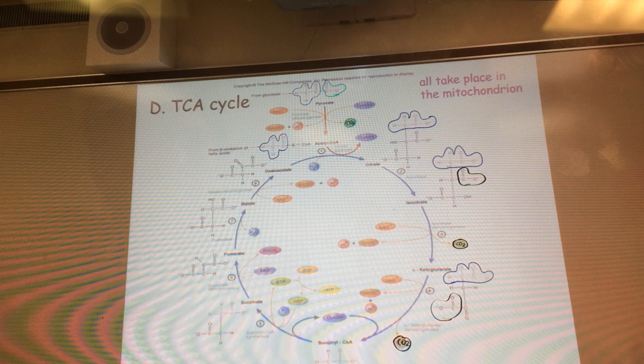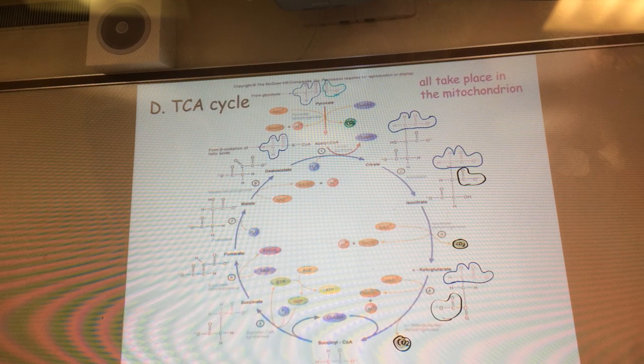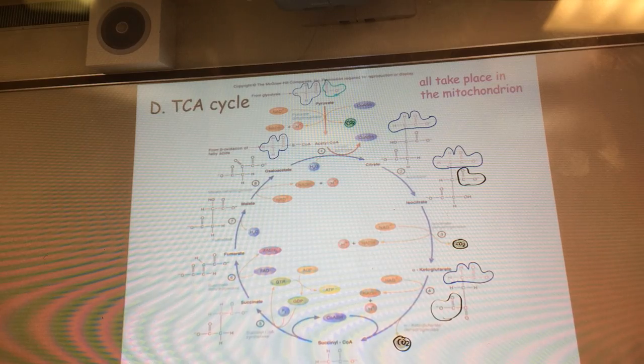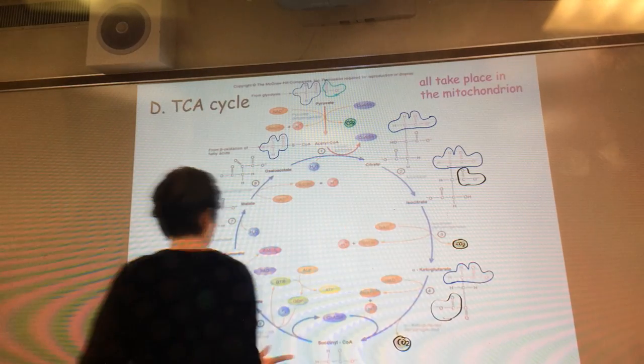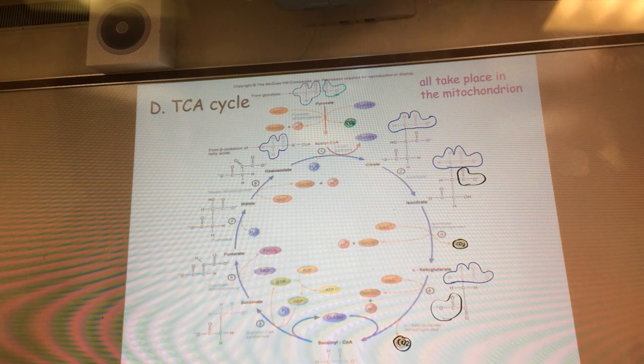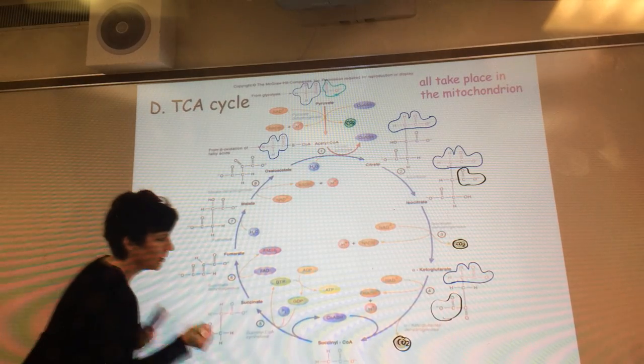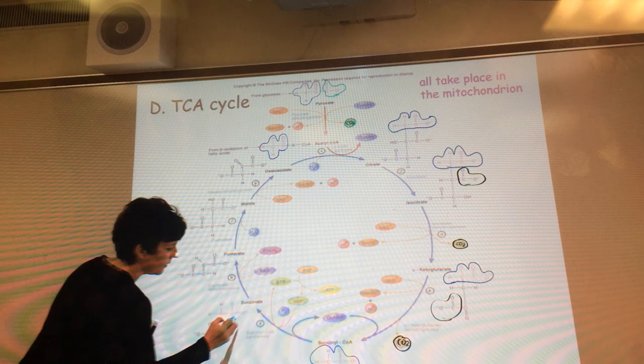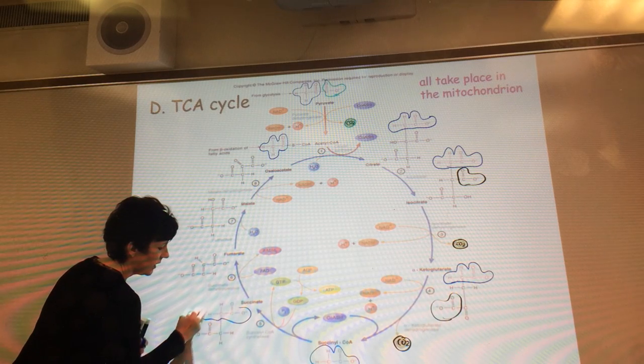And then we generate that molecule called succinyl-CoA. So now we're a four-carbon component, and we're going to stay four for a little while. We're going to go succinyl-CoA, then succinate. We're going to get rid of the coenzyme A off of it. But our two-carbon original acetate unit is still there.